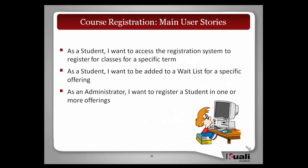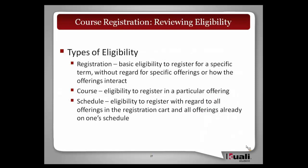As we started out in the course offering area, let's talk about some of the main user stories or epics that we were analyzing as we did this design. One is not too surprising: as a student, I want to access the registration system to register for classes for a specific term. Another: as a student, I want to be added to a wait list for a specific offering. And thirdly, as an administrator, to register a student in one or more offerings.